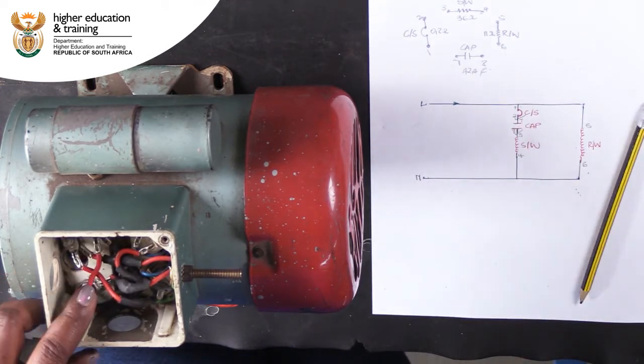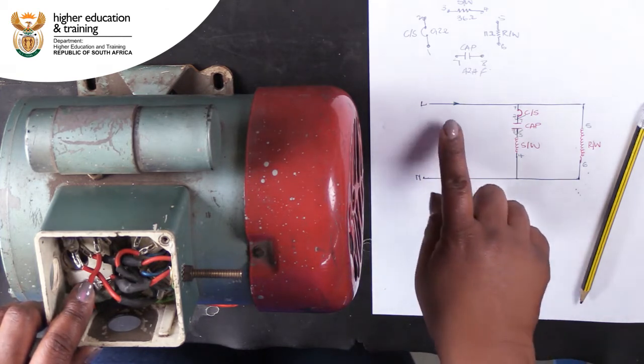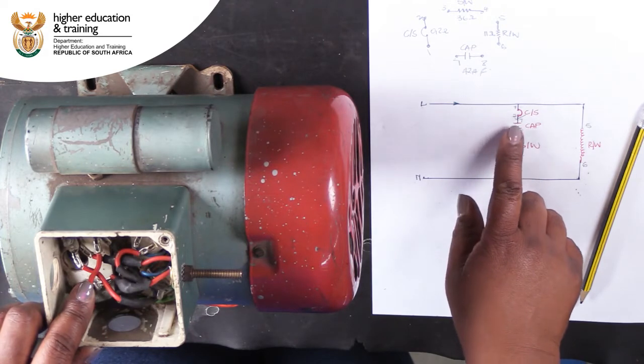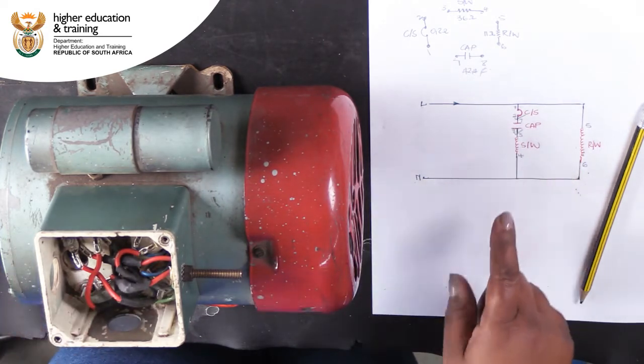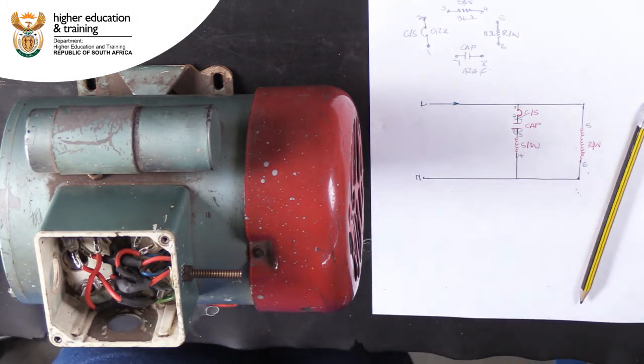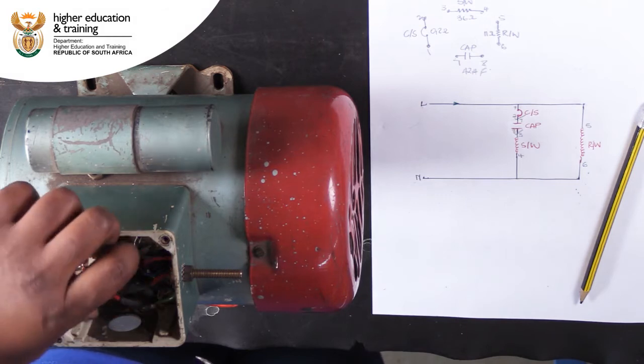Now, we can focus on what needs to be in place to supply power to all the components. We can see that we need to connect both points 1 and 5 to live. To do this, we use a bridge and connect it between points 1 and 5.